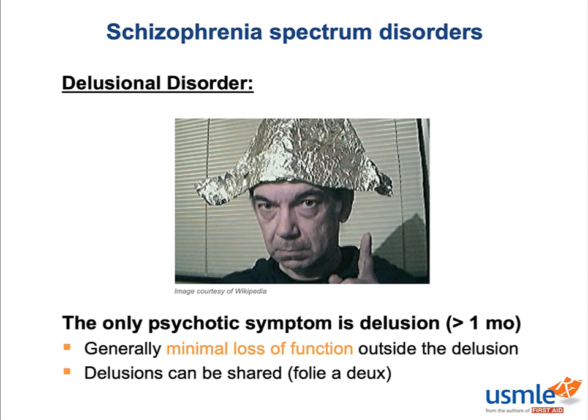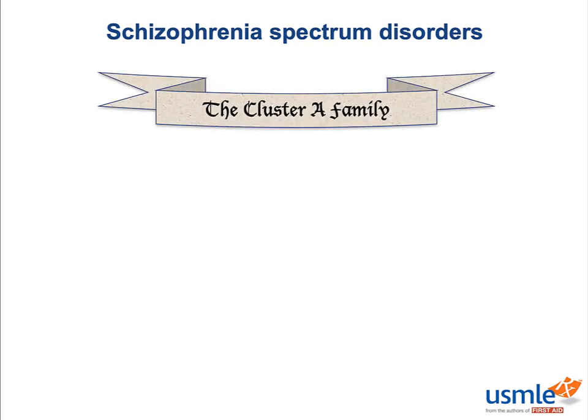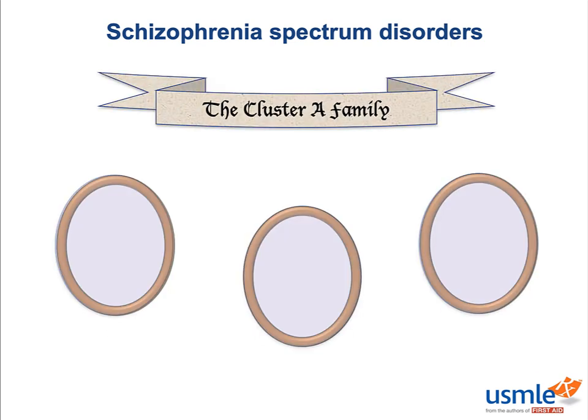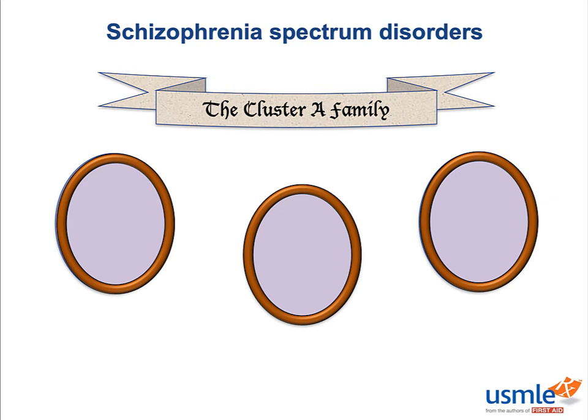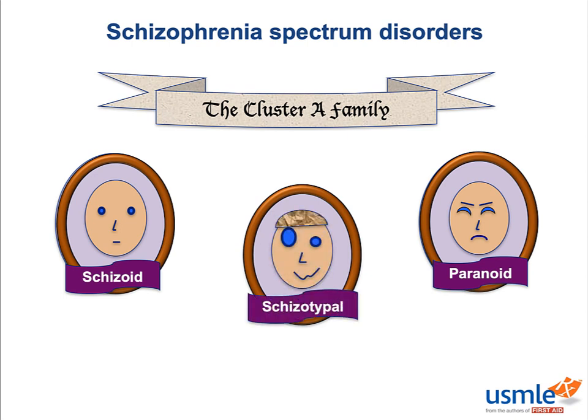You can't talk about the schizophrenia spectrum disorders without giving a nod to the cluster A personality disorders. There are three branches to this side of the psychotic family tree: paranoid personality disorder, schizoid personality disorder, and schizotypal personality disorder.